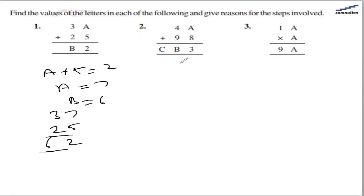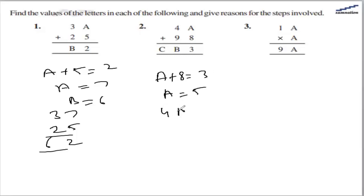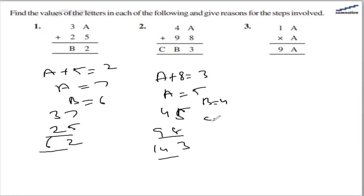In the second question, 4a plus 98 gives cb3, which means a plus 8 is 3. That is possible when a is 5, and 45 plus 98 gives 143. So b will be 4 and c will be 1.